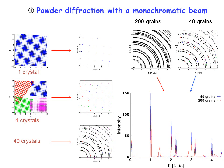By integrating the intensity of the different spots you get intensity as a function of |H| or as a function of θ, since each ring corresponds to a θ or 2θ angle of diffraction. To obtain good intensity statistics, you need a high number of grains — this is what is called having a 'good powder' in X-ray diffraction.